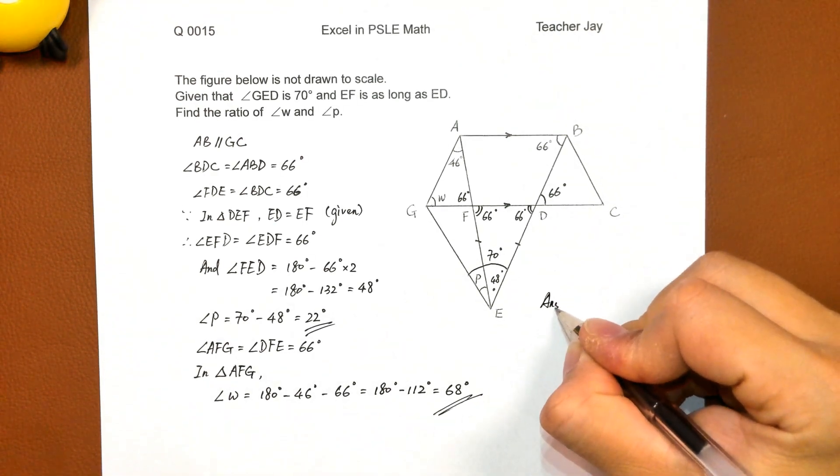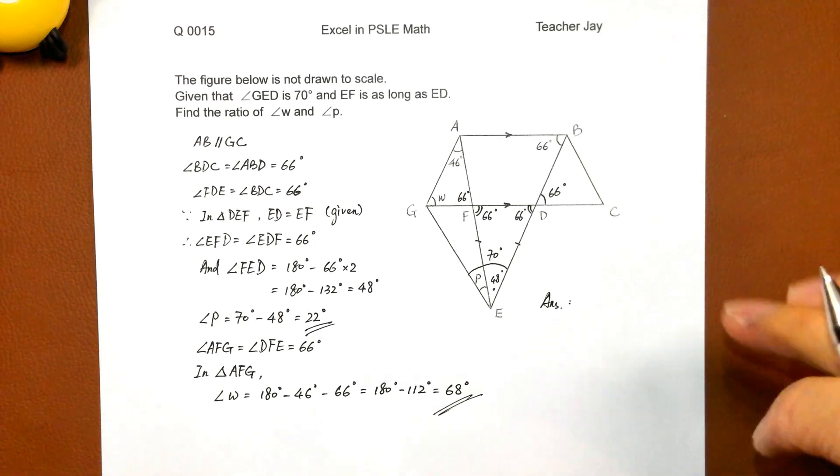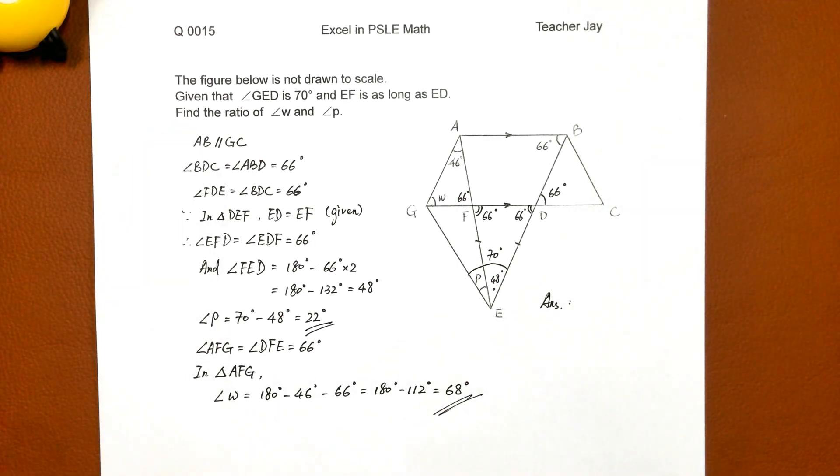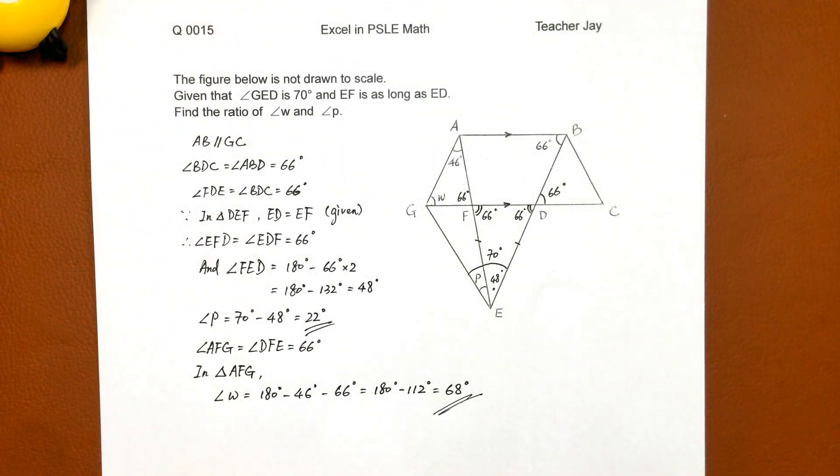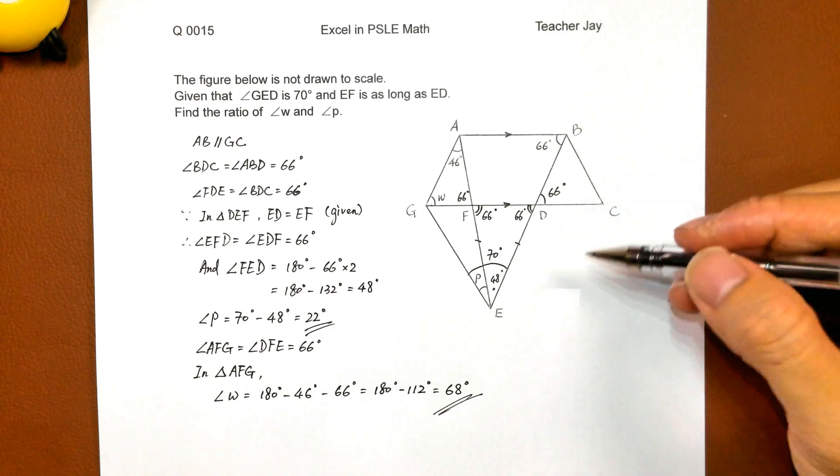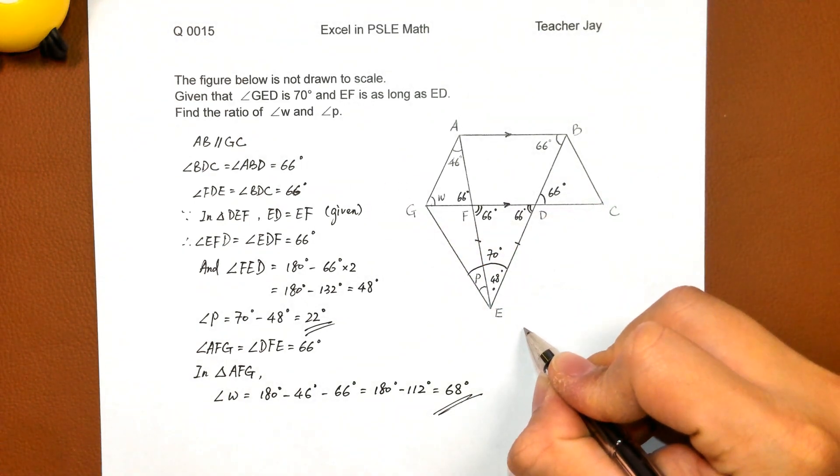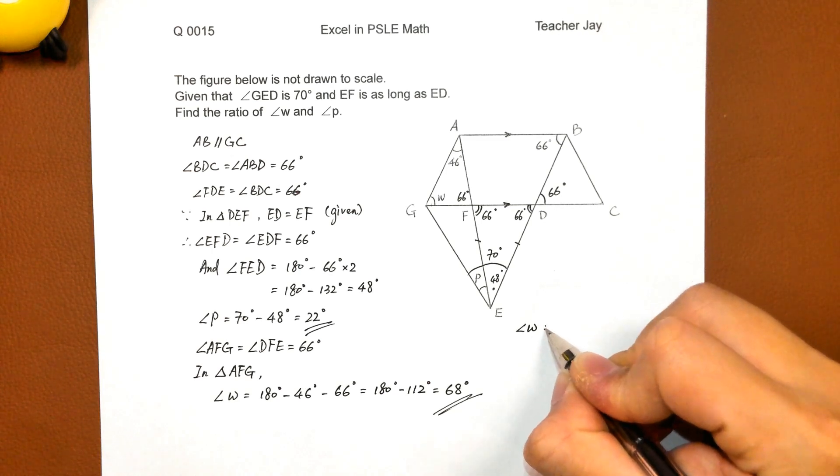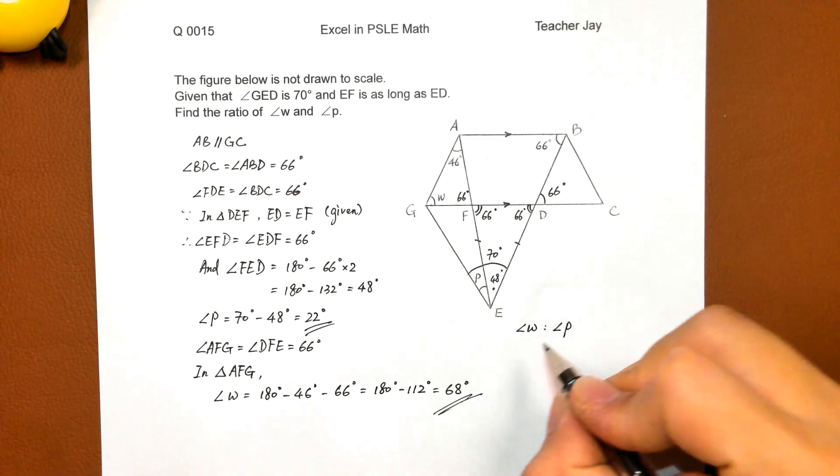So the answer here. Find the ratio, okay. It's not that easy for us to just find out these two angles. Further, we need to find the ratio, angle W and angle P, the ratio.